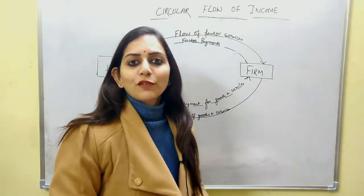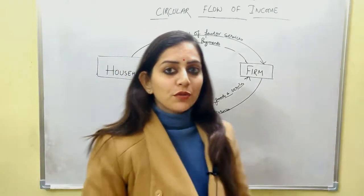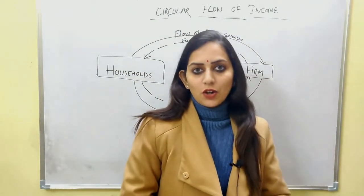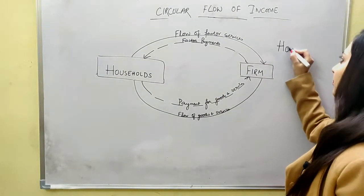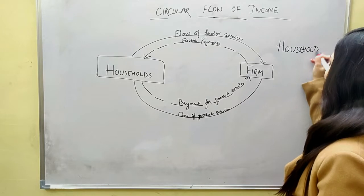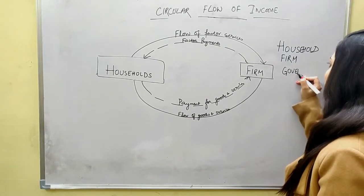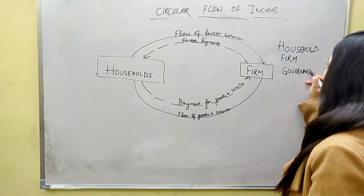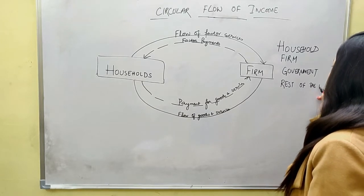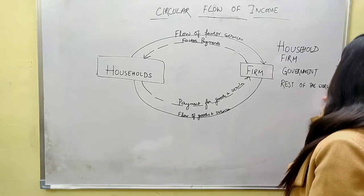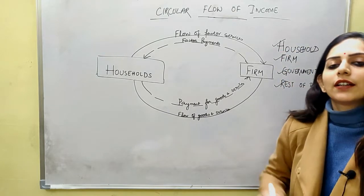Now let's start with circular flow of income. Circular flow of income requires you to know that there are four sectors in an economy. Those four sectors are household, firm, government, and rest of the world — which can also be called the foreign sector. These are the four sectors in an economy.